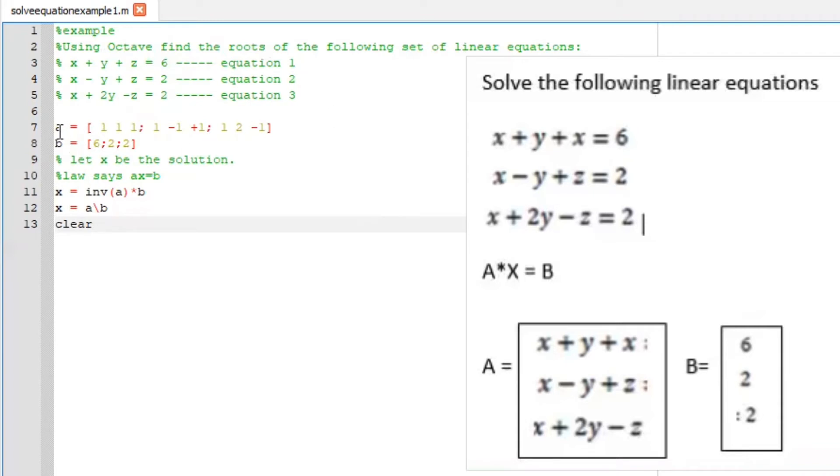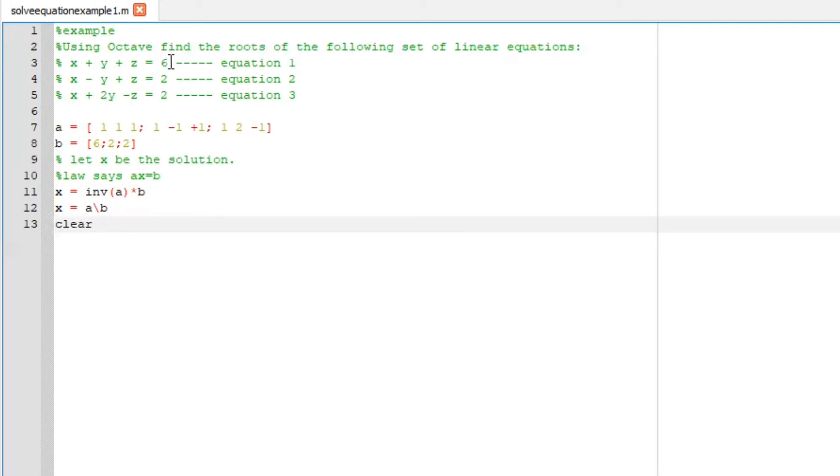Secondly, I am going to write down my A. Notice the vector for A. This equals to 1, 1, 1, colon, 1, negative 1, 1, semicolon, 1, 2, negative 1. Notice the negative signs as well, you need to write down everything as it is. For my B, I am going to write down everything here, and we are dealing with a column vector. So it is 6, semicolon, 2, semicolon, 2.